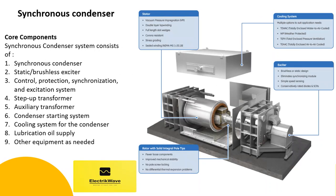Core components: A synchronous condenser system consists of the synchronous condenser, static or brushless exciter, control, protection, synchronization and excitation system, step-up transformer, auxiliary transformer, condenser starting system, cooling system for the condenser, lubrication oil supply, and other equipment as needed.